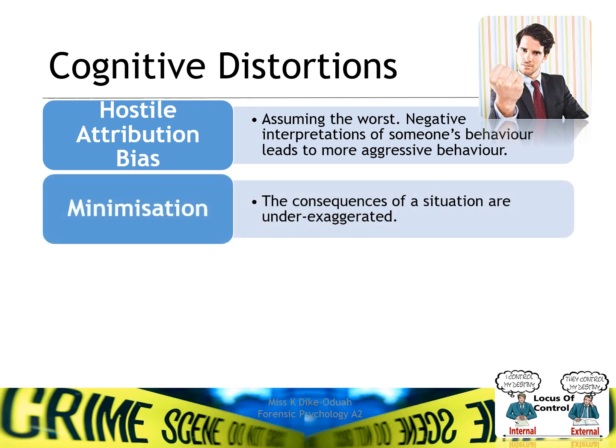We have minimisation, which is when you downplay or under-exaggerate the consequences of your behaviour. You minimise those consequences — that can be a distortion because you might be stealing someone's precious jewellery that they got from their grandmother, but you downplay it because perhaps they come from a rich background and say, well, they can get another one.